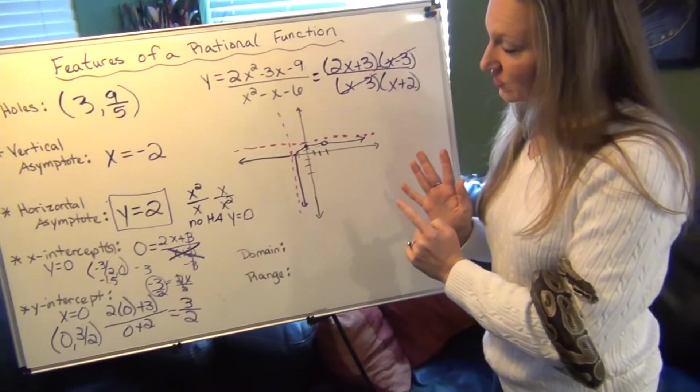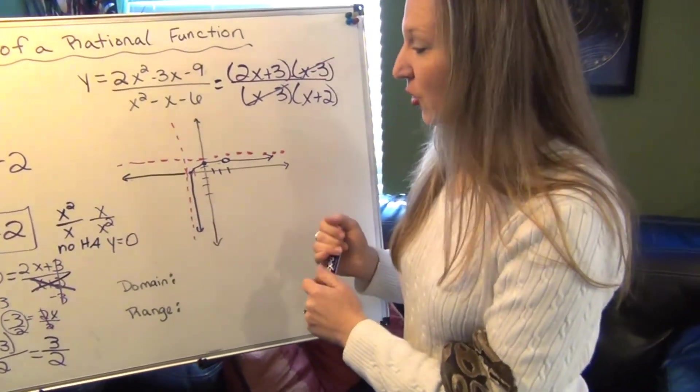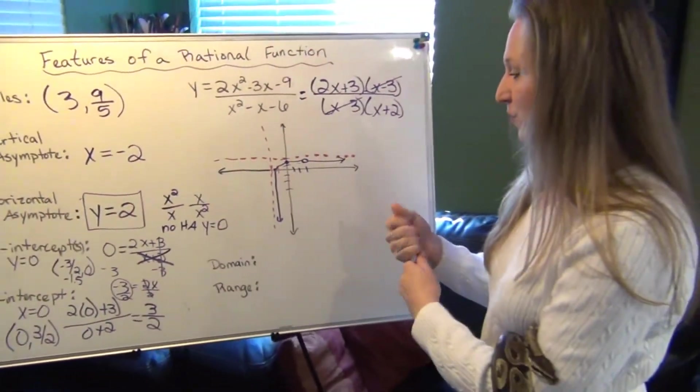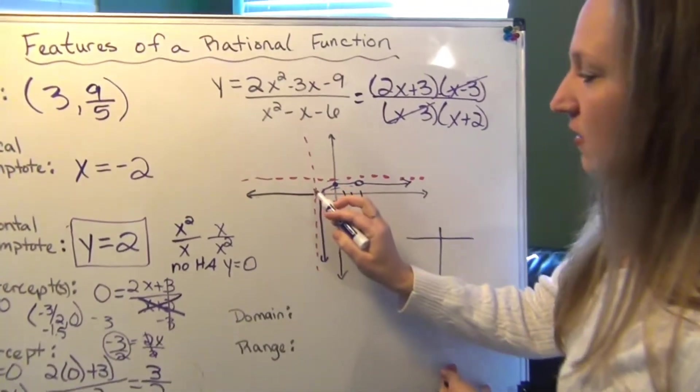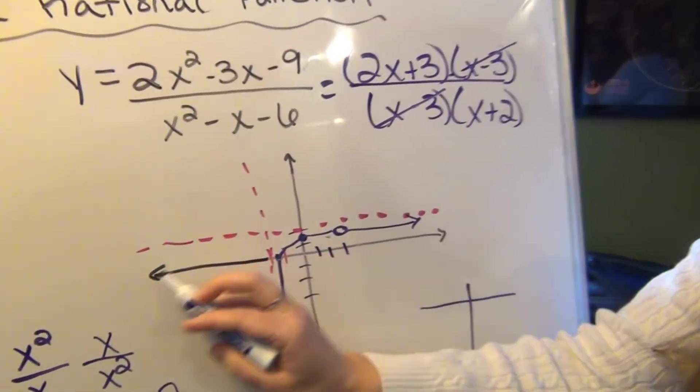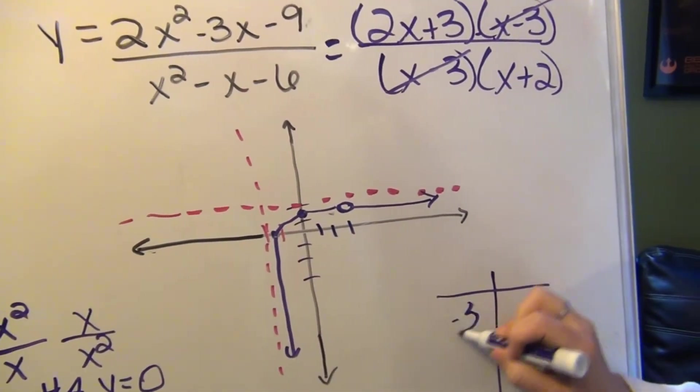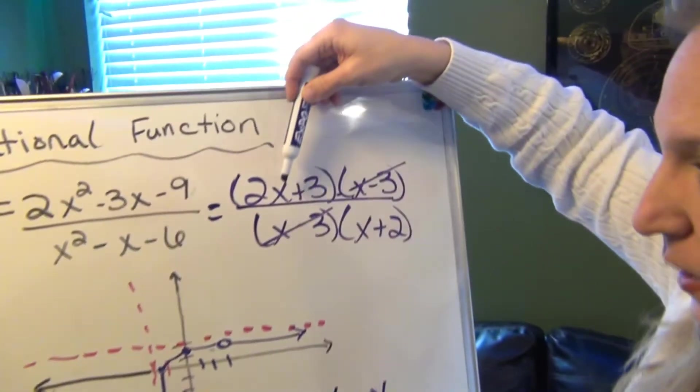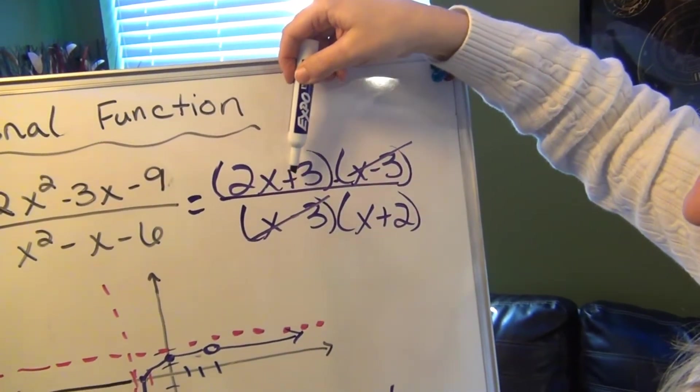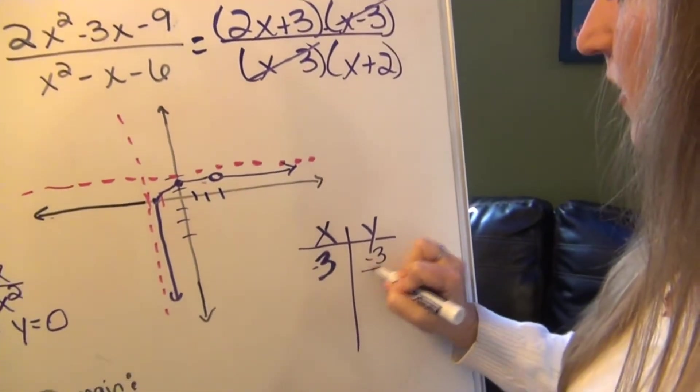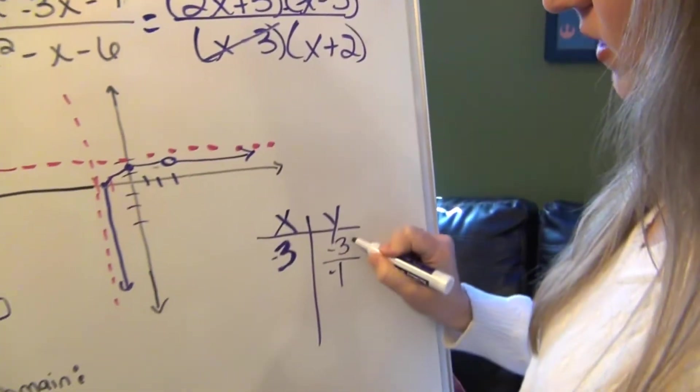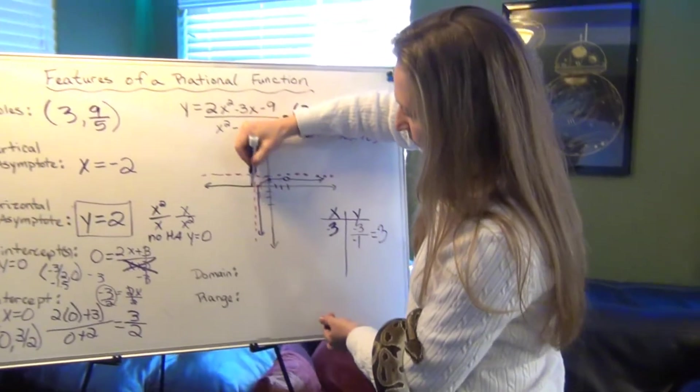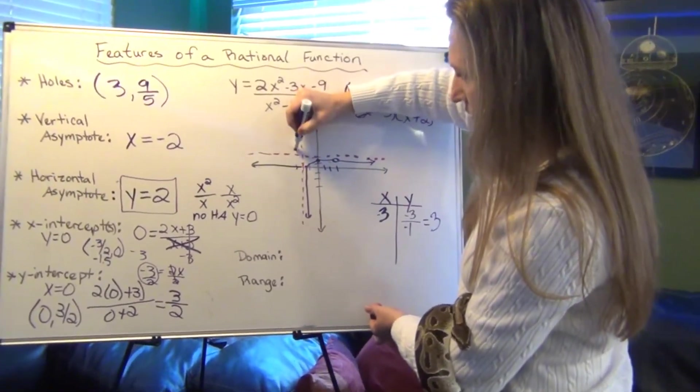So now all we have left to graph is to find where the other piece of the rational function is going to go. Since we have no more information, we're going to do a test point over here to see if we can get an idea where the graph is going to go. So all I'm going to do is choose a point. This is at negative 2. So any point over here is going to give us information. So I'm just going to arbitrarily choose negative 3. I'm going to plug negative 3 in for x in our remaining function so we can get a point. 2 times negative 3 is negative 6 plus 3 is negative 3. Negative 3 plus 2 is negative 1. So negative 3 divided by negative 1 is 3.